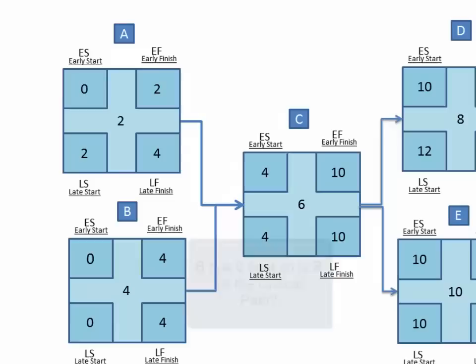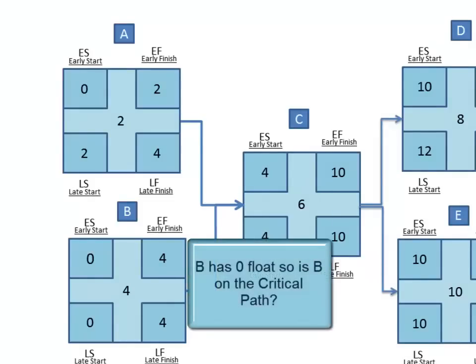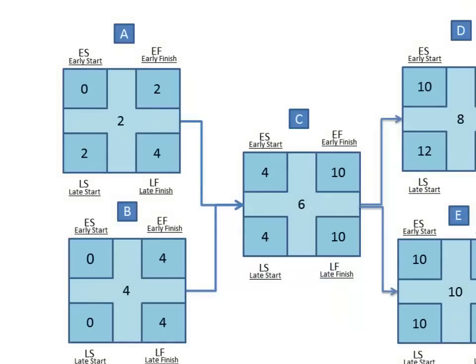Alright, I'm certain you know this one. Is B on the critical path? You're right it is. Any task with zero float is on the critical path.